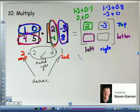4 times 2 is 8. 5 times negative 1 is negative 5. Add the two together. 8 plus negative 5. Positive 3.